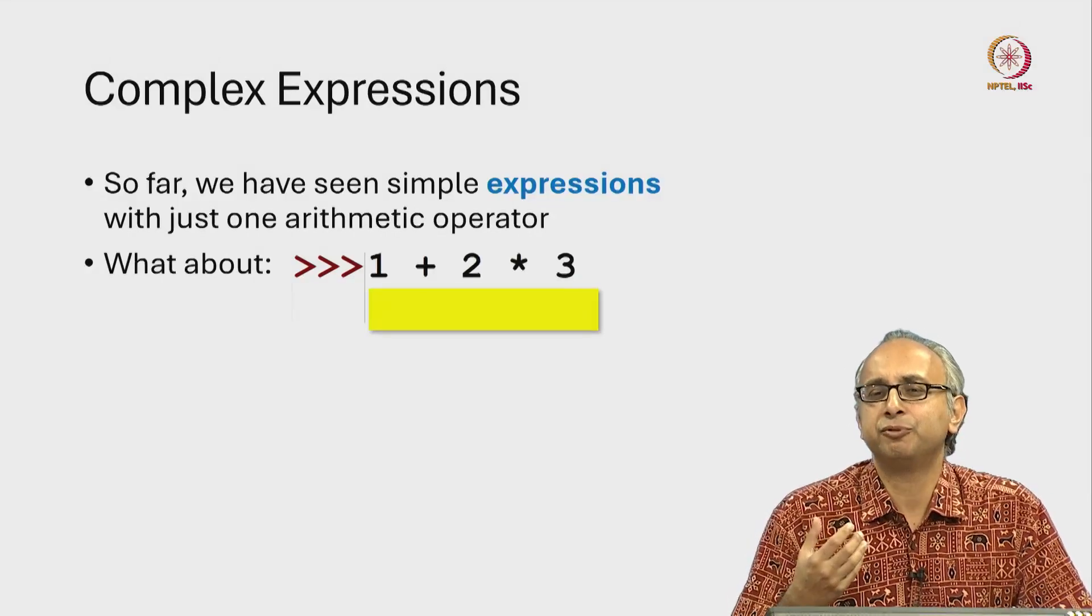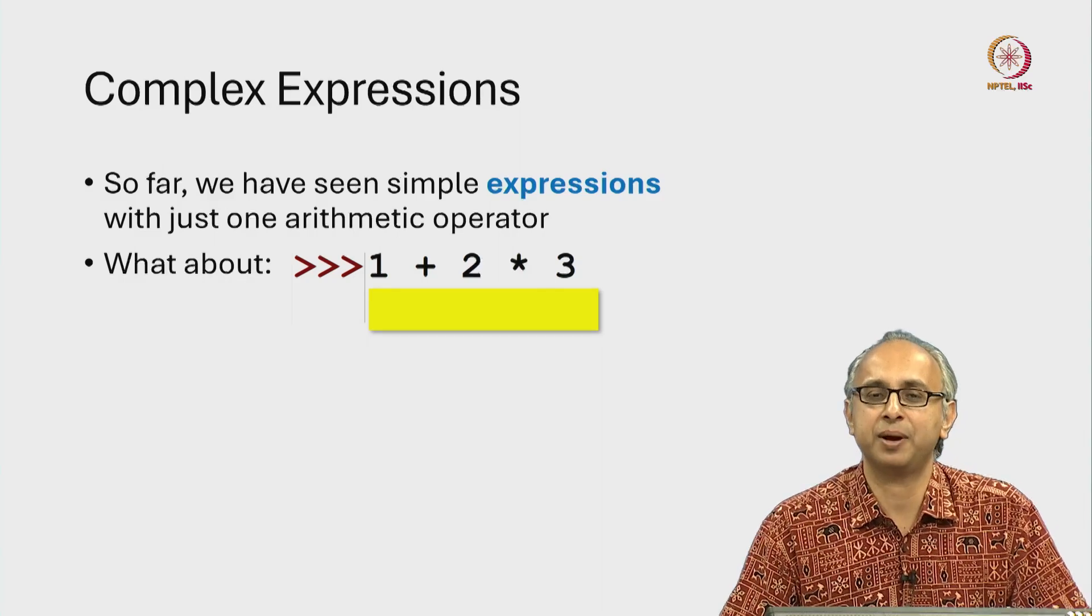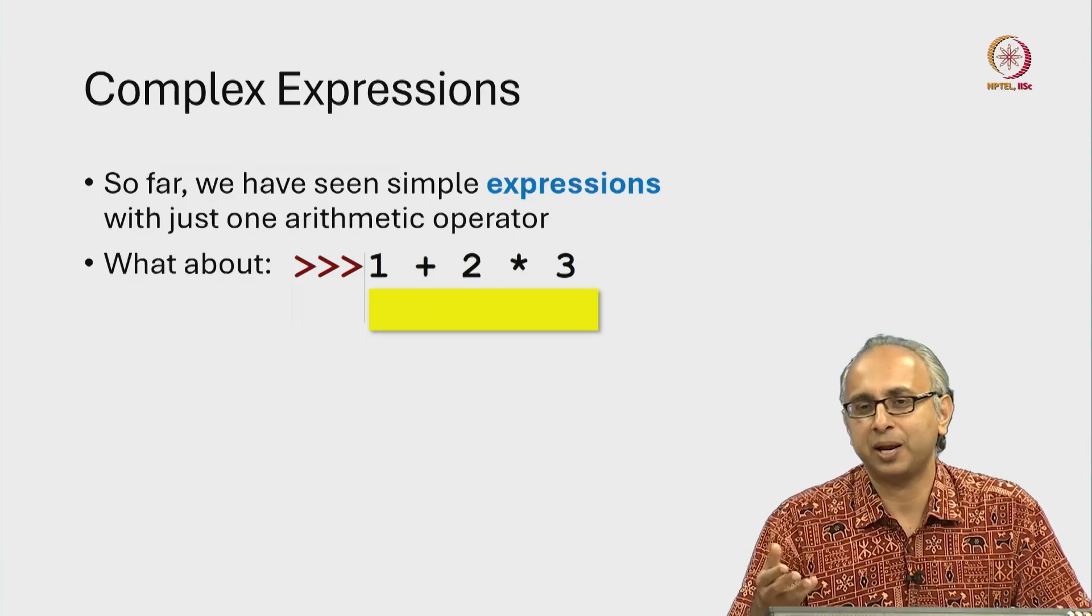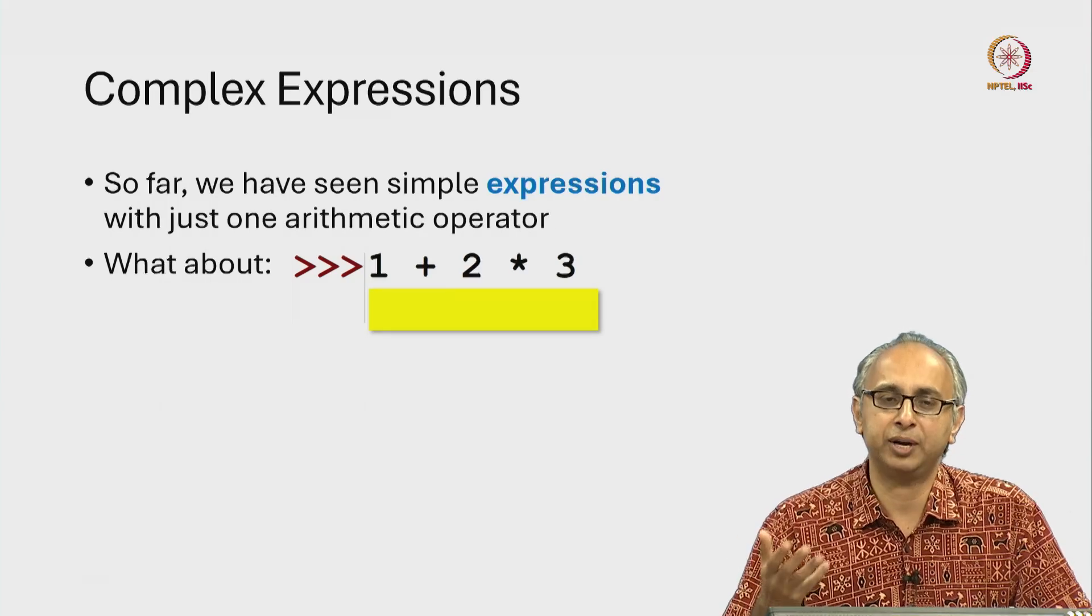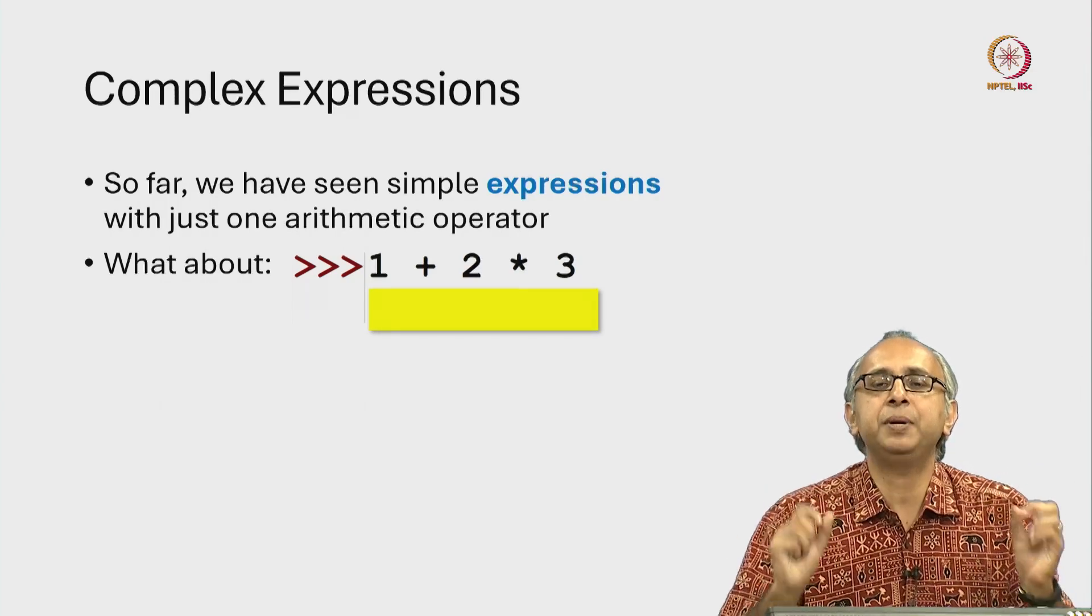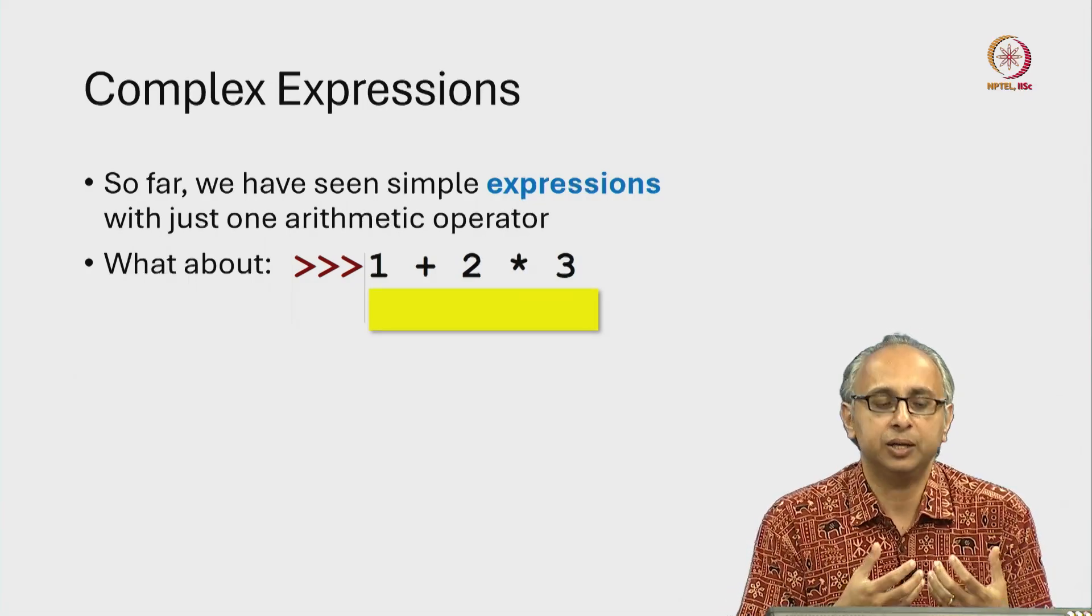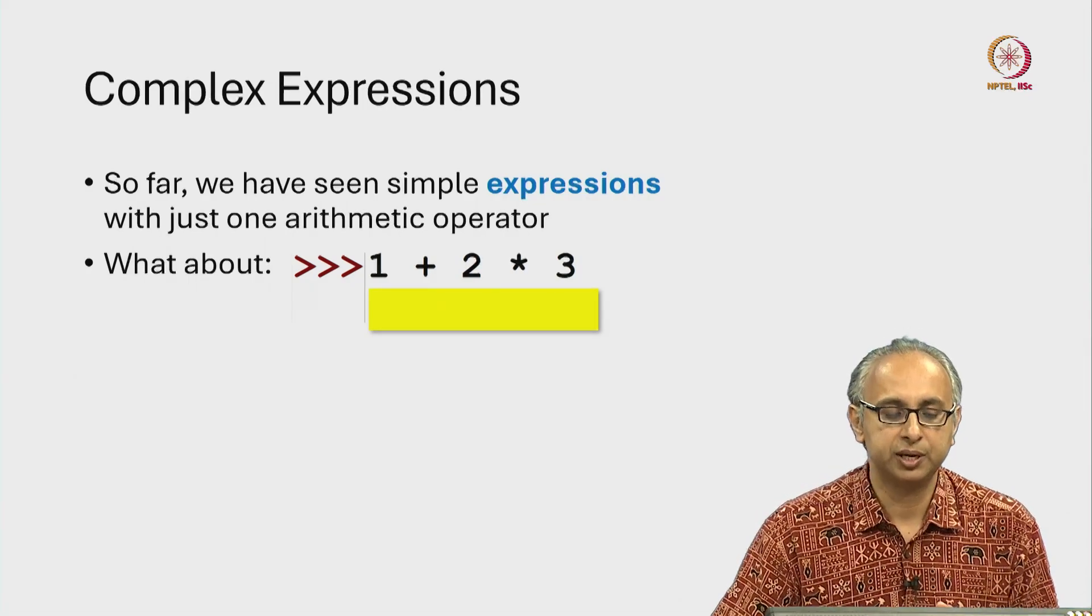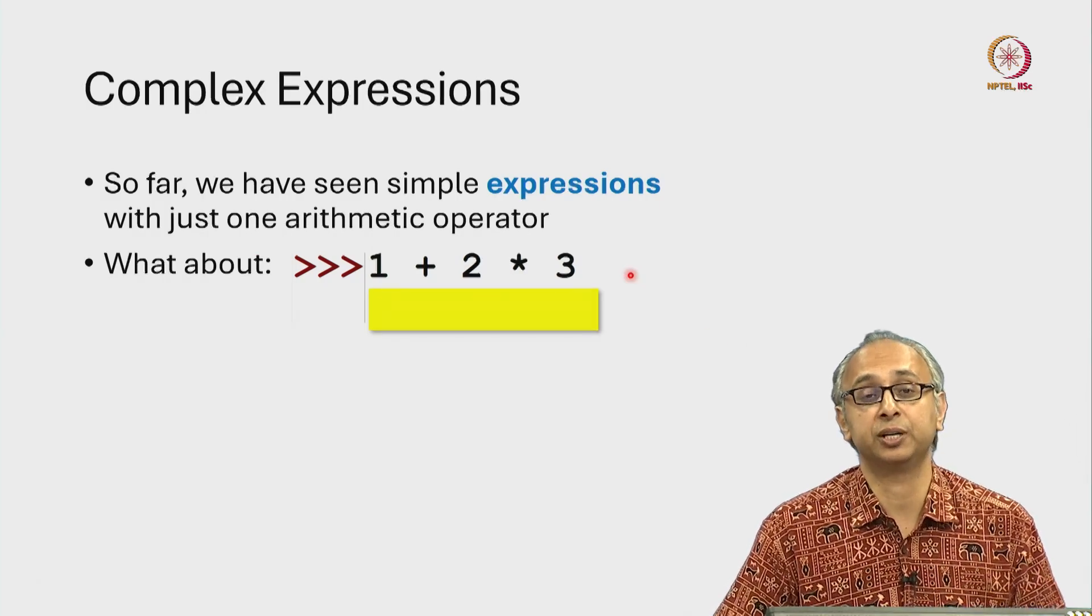So far we have just seen some very simple expressions involving one mathematical operator, whether it is plus or true division or floor division or remainder or exponentiation. But many times we have many pieces of data to compute with and we will end up writing complex expressions like this one. So what is the result of a complex expression like this?